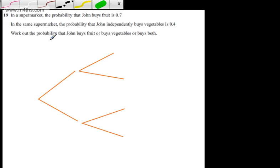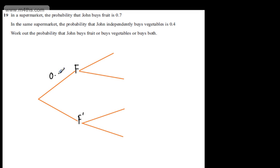So if I do this, what I can say is now I'll have fruit or not fruit. And I'm going to use fruit dash, so F dash. If the probability that he buys fruit is 0.7, the probability that he doesn't is 0.3.